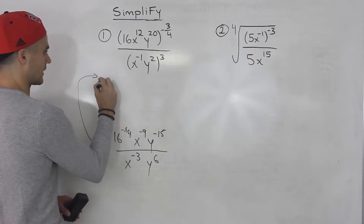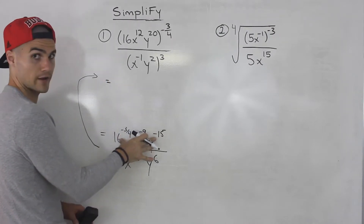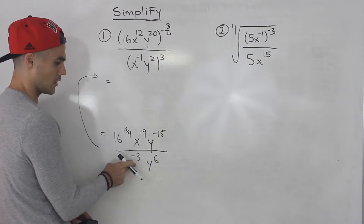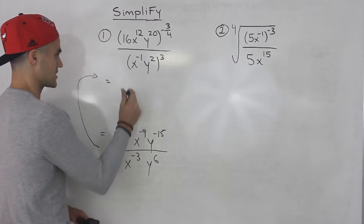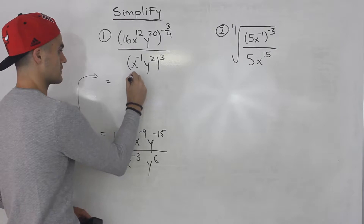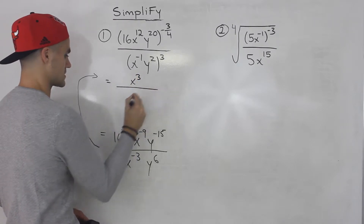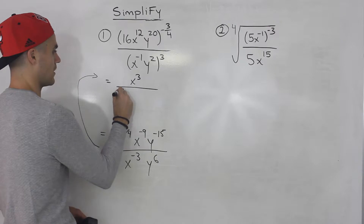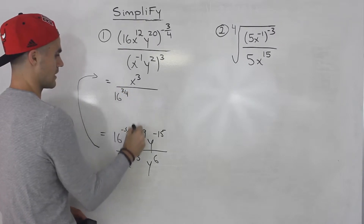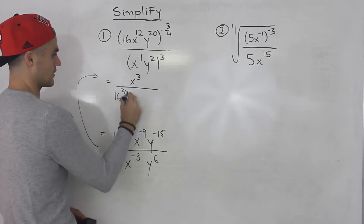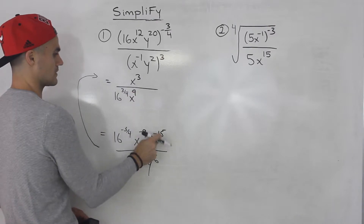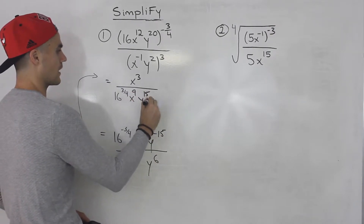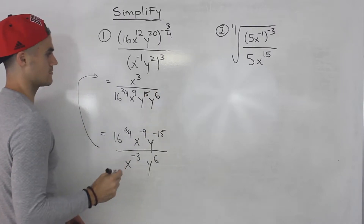Let's take all of the negative exponents in the numerator and bring them down to the denominator, and take the negative exponent in the denominator and bring it up to the numerator. So x to the negative 3 comes up and becomes positive x cubed. This is going to be all over 16 to the power of positive 3 over 4. The x to the negative 9 becomes x to the positive 9, and y to the negative 15 becomes y to the 15. And we're still left with y to the 6 at the bottom.